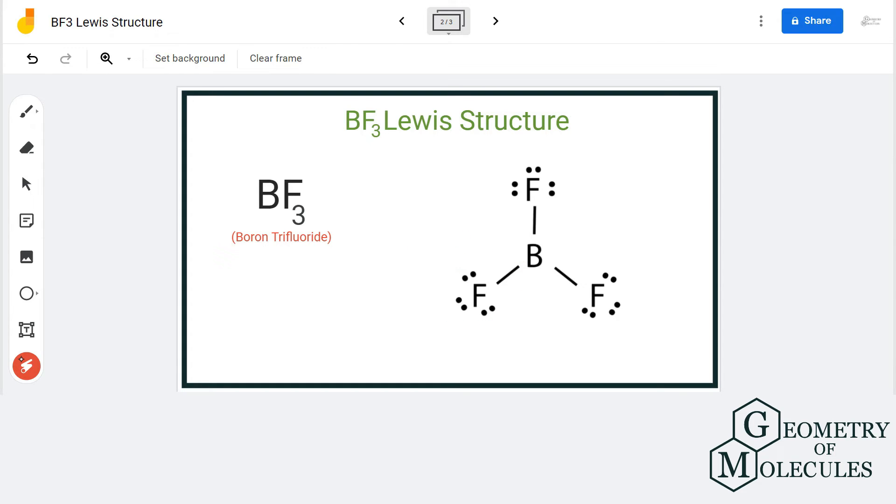But you might be wondering what about boron? It just has six electrons because it is sharing all three of its electrons with fluorine atoms. Well, boron is an exception to the octet rule and it can do with six electrons in its outer shell. So it is okay if it doesn't have eight valence electrons. Due to this exception for the octet rule, boron is fine with six valence electrons.